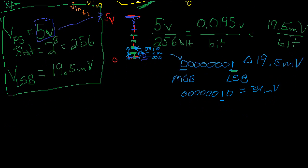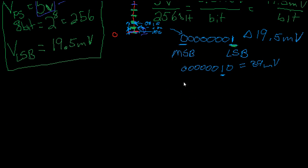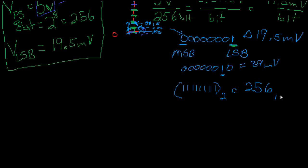Let's look at the binary word 11111111. We know that this in binary is equal to 256 — we've been dealing with this all along — in base 10. If you need to review this, you can go back to a previous video or check Khan Academy. But this represents 256 in base 10.